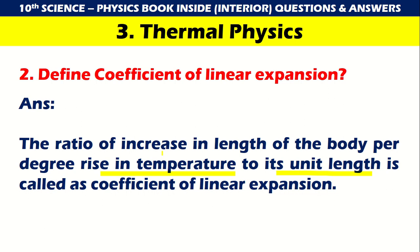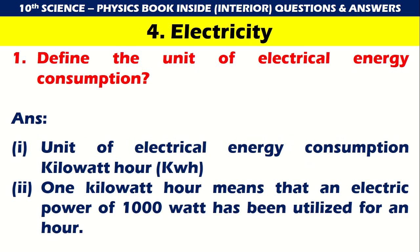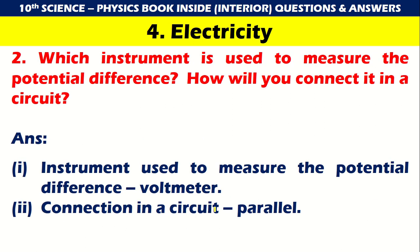Chapter 4: Electricity. Define the unit of electricity consumption — it is the kilowatt hour (kWh). One kilowatt hour means that an electric power of 1000 watts has been utilized for one hour. Which instrument is used to measure potential difference and how is it connected in a circuit? The instrument used is a voltmeter, and it is connected in parallel in the circuit.